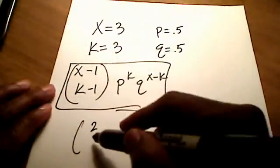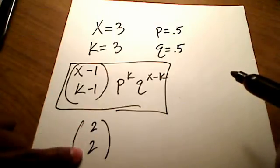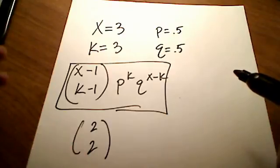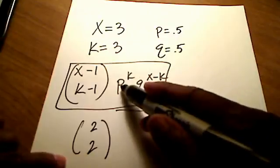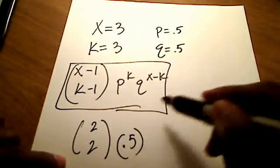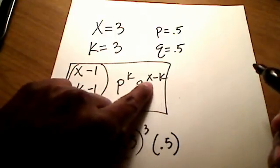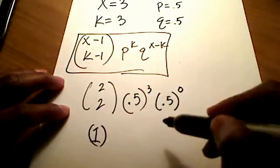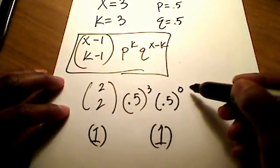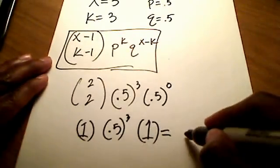If x is equal to 3, then the top number is 3 minus 1, which is 2, and k minus 1 is also 3 minus 1, which is 2. So we have 2 choose 2, which is simply 1 — anytime n and r are exactly the same number, that's always just 1. Then p is 0.5 raised to k, which is 3. And q raised to x minus k: since they're both the same, that exponent is 0, and anything to the 0 power is just 1. So we really have just 0.5 raised to the 3rd power, which is 0.125.